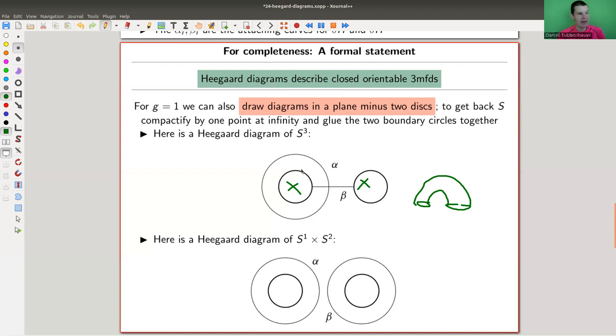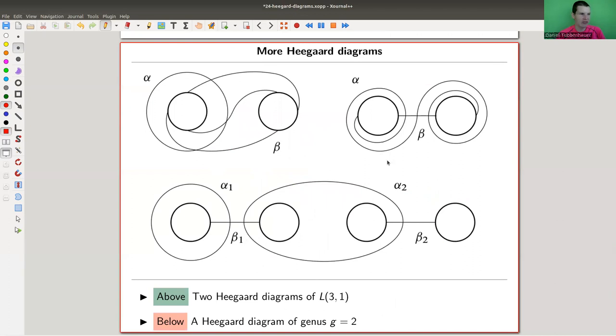So here a Heegaard diagram, a handle diagram. Here a handle diagram for S³, for example, and here a handle diagram for S¹ cross S². And you can do that for arbitrary genus, actually. For example, here's a genus 2 picture. In genus 2, the only thing you have is, well, this is two, and this is the one handle, you just have more of them. And you just still draw your little curves on the plane.